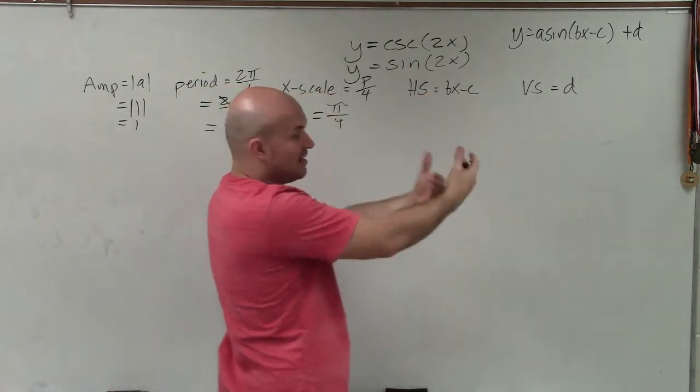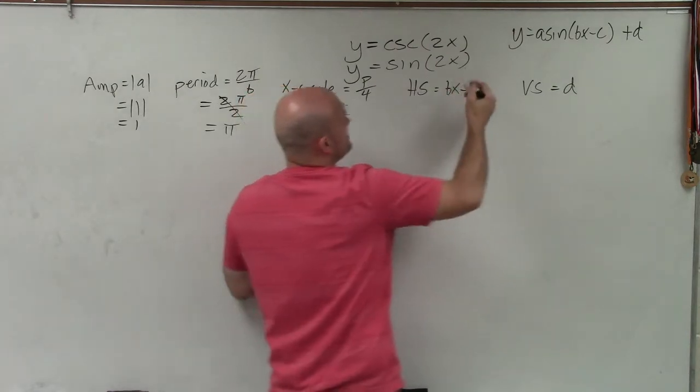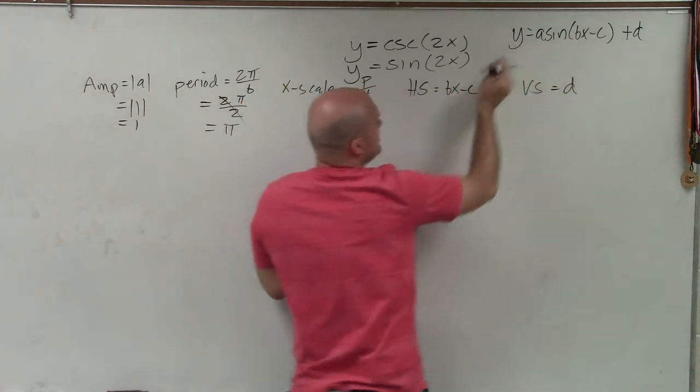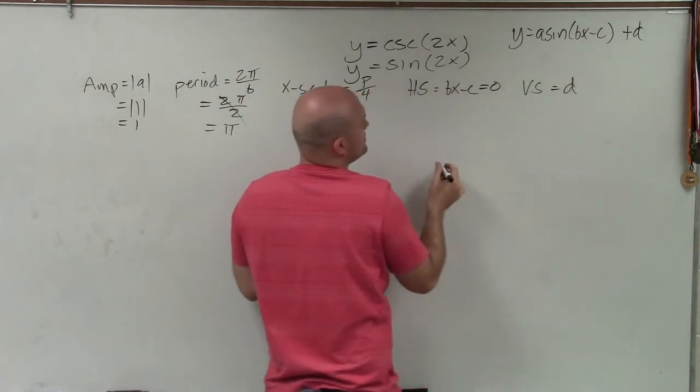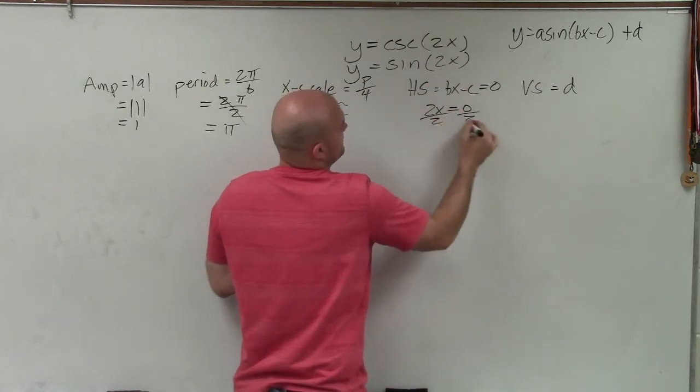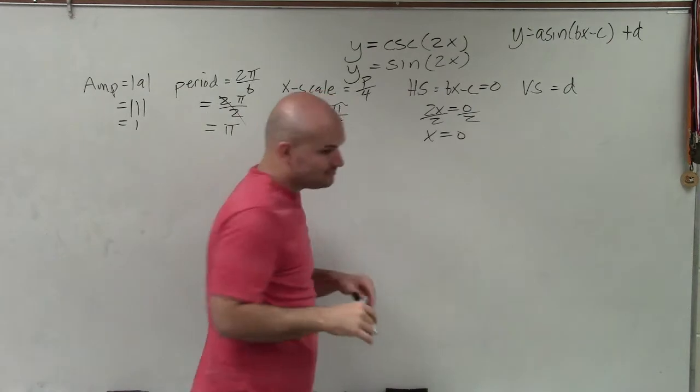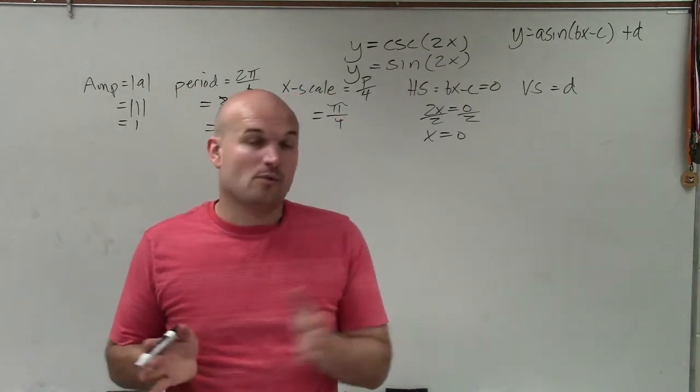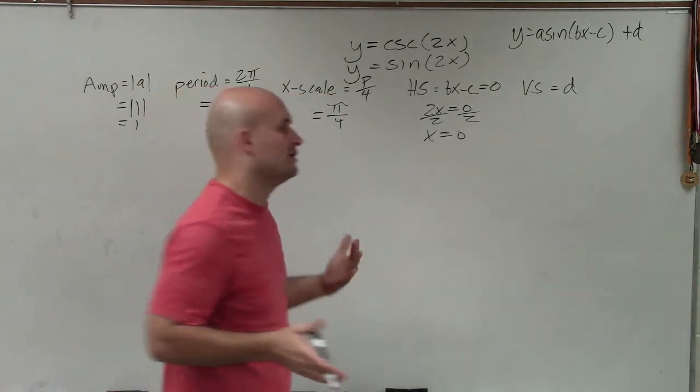My horizontal shift, that's going to be how am I going to move my graph left or right. All we simply do is take whatever's inside our function and set it equal to 0. So here I have 2x equal to 0, divided by 2, x equals 0. So therefore, we're not going to be shifting it anywhere from our parent graph.